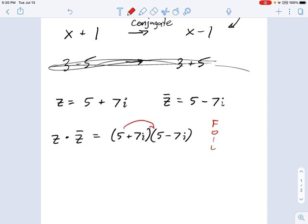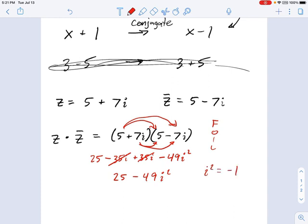The first part is 5 times 5, that's 25. The outer is 5 times negative 7i, so that's negative 35i. The inner is positive 35i, and you can maybe see what's going to happen here. The last is 7i times negative 7i, which is negative 49i squared. Let's simplify this by combining like terms. The negative 35i and the positive 35i cancel out. So all we have is 25 minus 49i squared. And if you remember what i squared is, i squared is negative 1. So this becomes 25 minus 49 times negative 1, which is 25 plus 49, which equals 74.